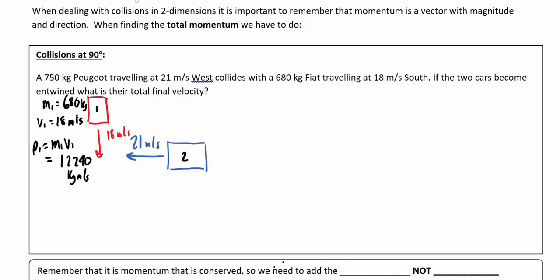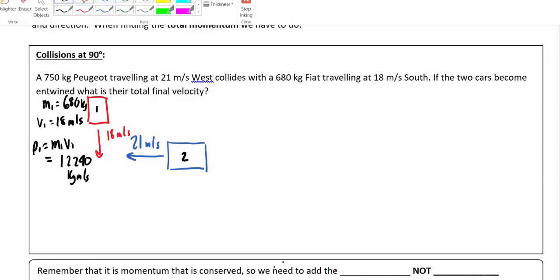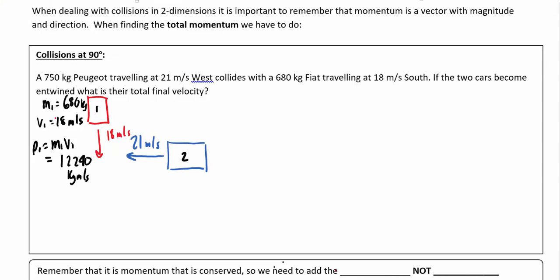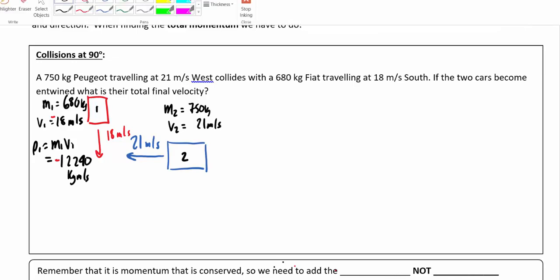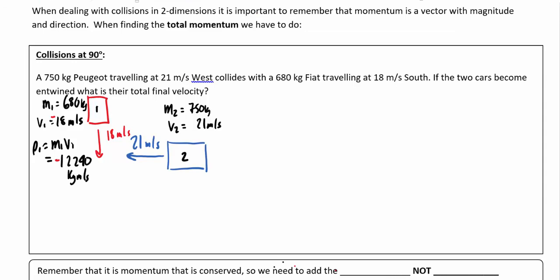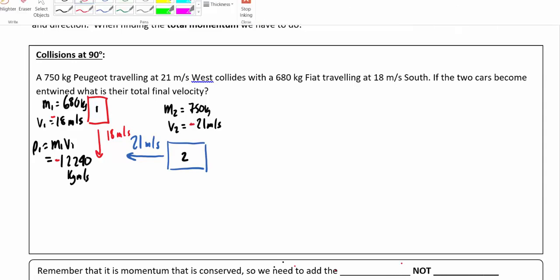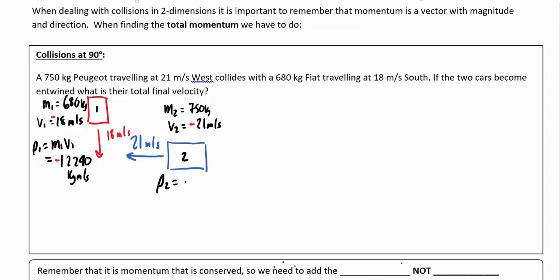It's worth noting that this car is traveling south. As vectors go, when we have something going south or downwards, we think of that as negative — it's in the negative y direction. Similarly, I can calculate the momentum for the second car where M2 is 750 kilograms and V2 is 21 meters per second. Since this car is traveling west, which is the negative x direction, P2 initial equals M2 times V2, which works out to be about negative 15,750 kilogram meters per second.